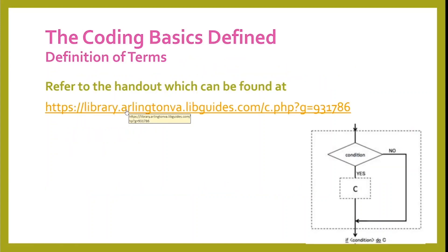The definition of terms for coding can be found in the handout. I did want to cover two things that I think you'll find useful as we go through this class. One is open source, which means that the code is free to access, use, and adapt. Open source does not necessarily mean that they're free, although many open source coding paradigms and languages are free.